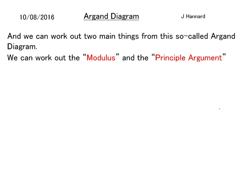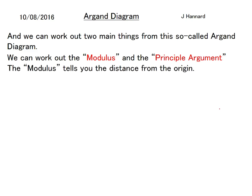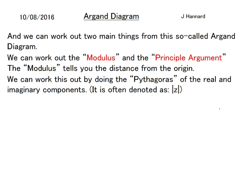The modulus is simply the distance from the origin. We can work this out by doing Pythagoras on the real and the imaginary components. If you imagine going out along the real axis and then up the imaginary axis, you're creating a right-angle triangle, and we simply do Pythagoras to find the distance. It is often denoted as |z| — putting z in jail, so to speak. You'll have come across that modulus sign in Core 3 and Core 4 A-level.